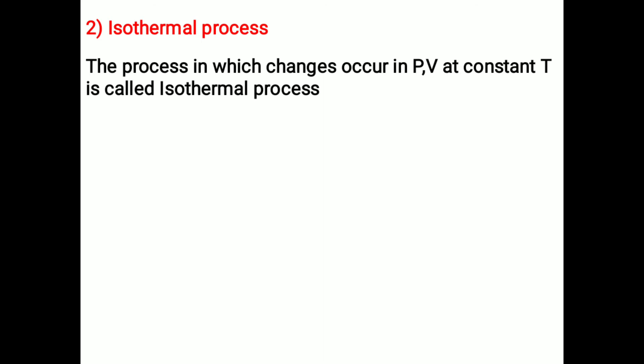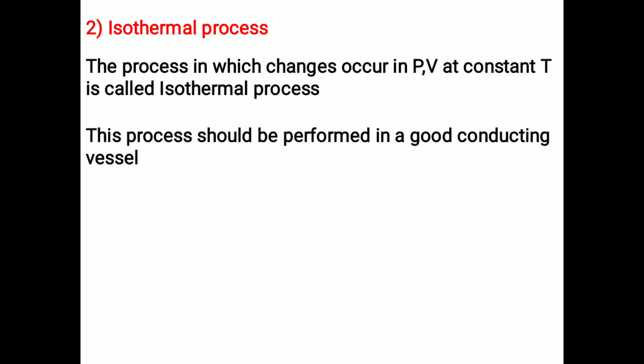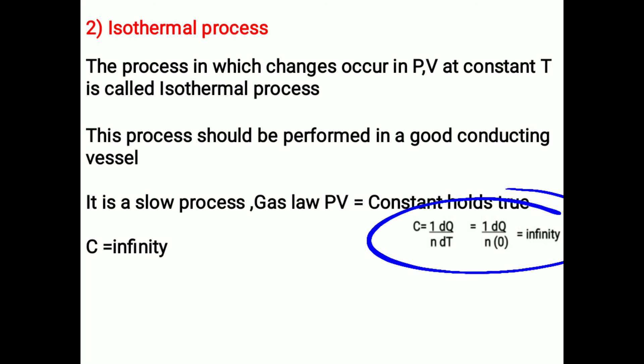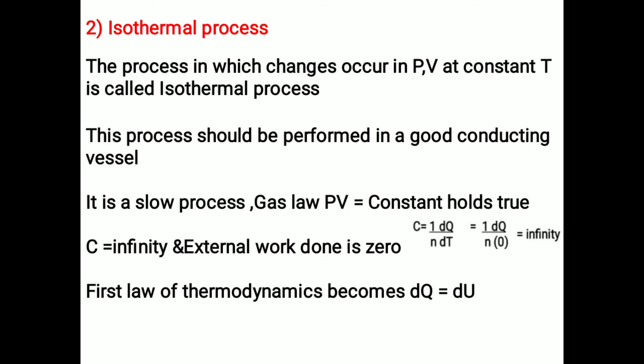Next, isothermal process. The process in which changes occur in pressure and volume at constant temperature is called an isothermal process. This process should be performed in a good conducting vessel; it is a slow process. The gas law pv equals constant holds true. In isothermal process, specific heat capacity c equals infinity, and external work done is not zero. The first law of thermodynamics becomes dq equals du. Example: boiling of water in open air.